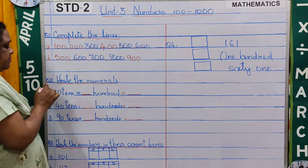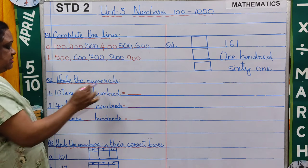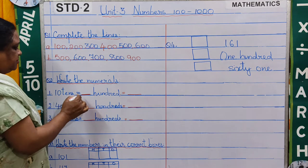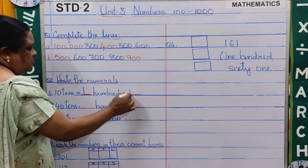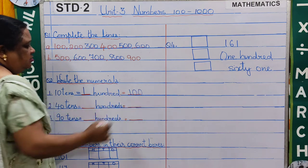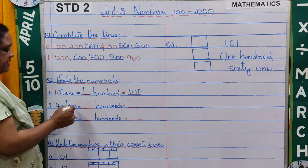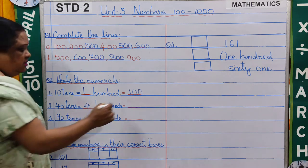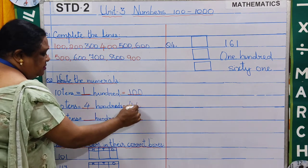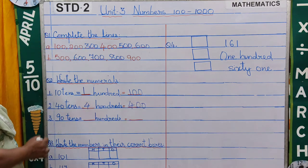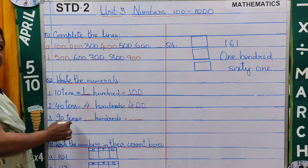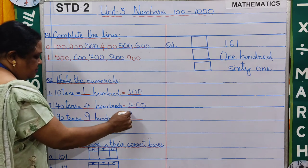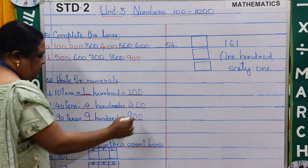Question number 2 — write the numerals. 10 tens is equal to 100; in numerals we write 100. Number 2: 40 tens is equal to 400; in numerals we write 400. Number 3: 90 tens are 900; we write the numeral 900.